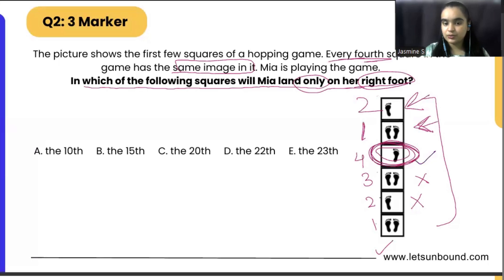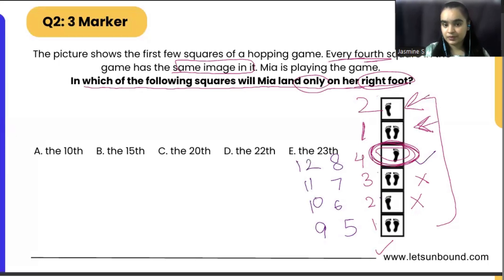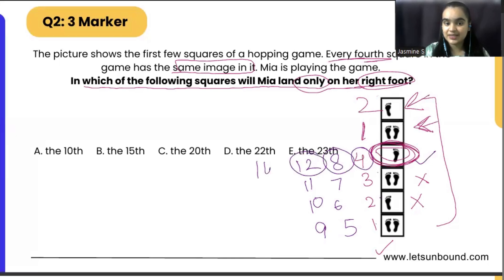So counting: one, two, three, four, then five, six, seven, eight, nine, ten, eleven, twelve. If you look at the position of the right foot, it will be at the multiples of four — four, eight, twelve — then we can have the 16th and then the 20th position.